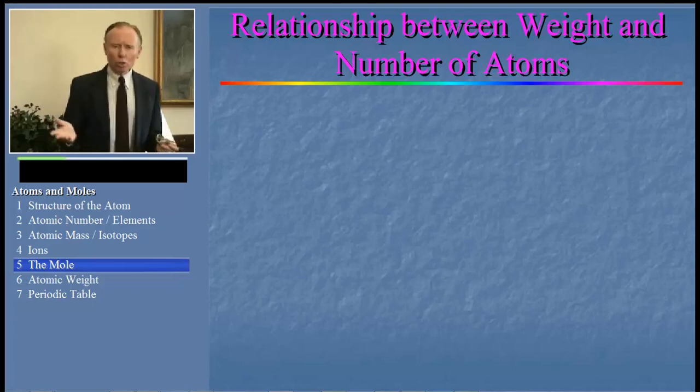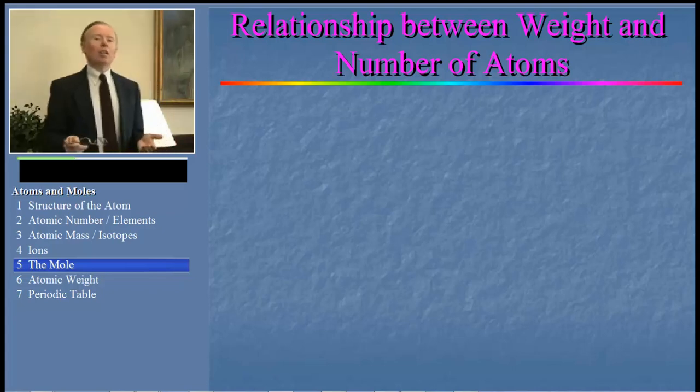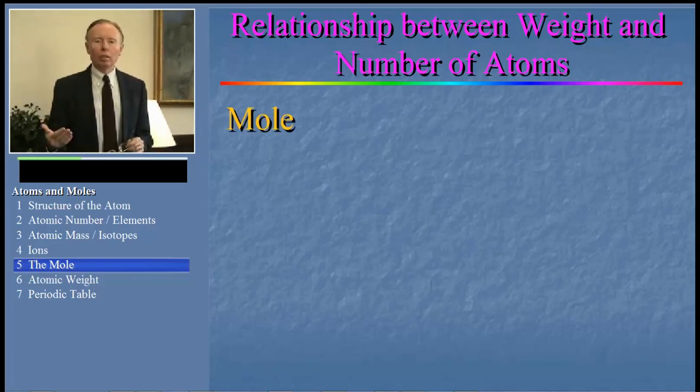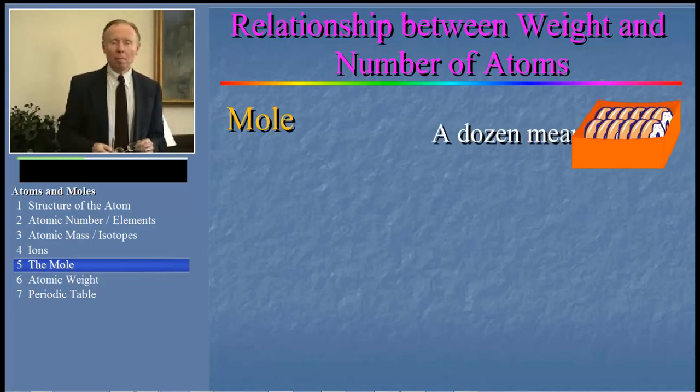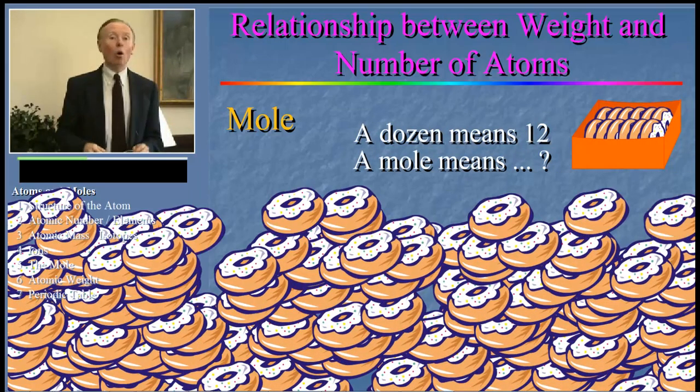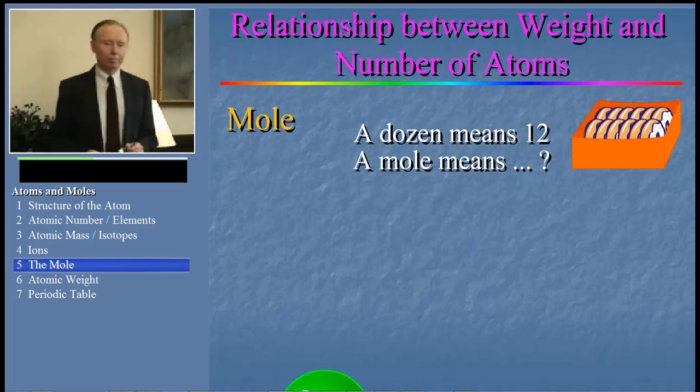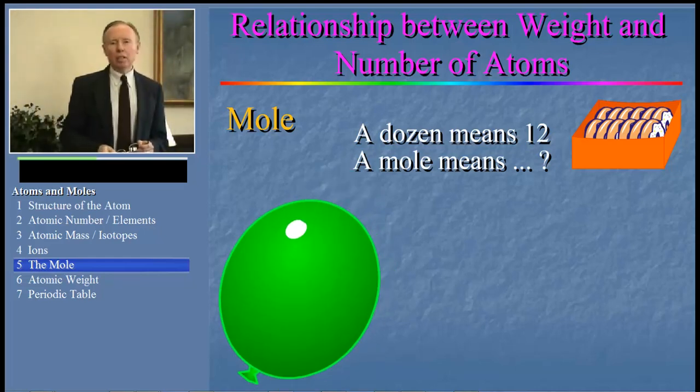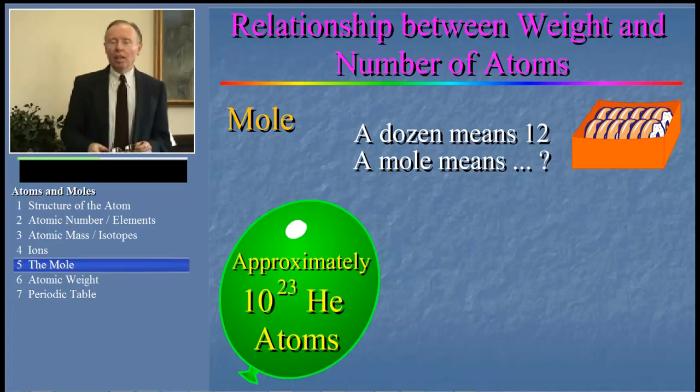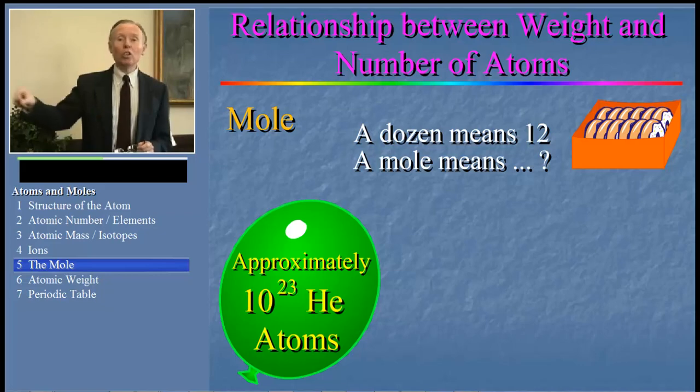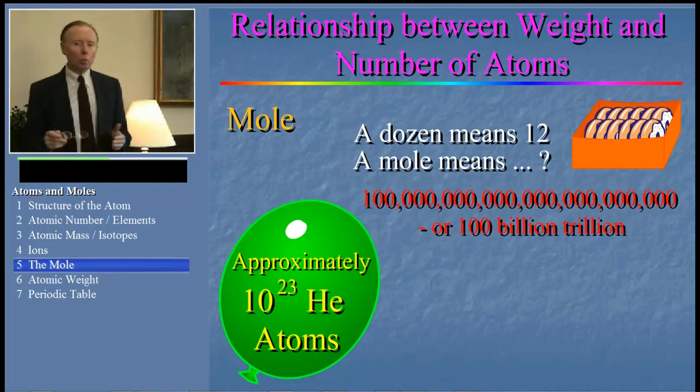Now atoms are so small that for a sample to be big enough to actually handle, it has to have an astronomical number of atoms in it. And that's why chemists define a term, the mole. Chemists use the word mole like bakers use the word dozen. Except that a chemist's mole is a whole lot bigger than a dozen. How much bigger? Take a typical helium party balloon. That balloon contains about 10 to the 23rd helium atoms. That's one followed by 23 zeros, or 100 billion trillion helium atoms.